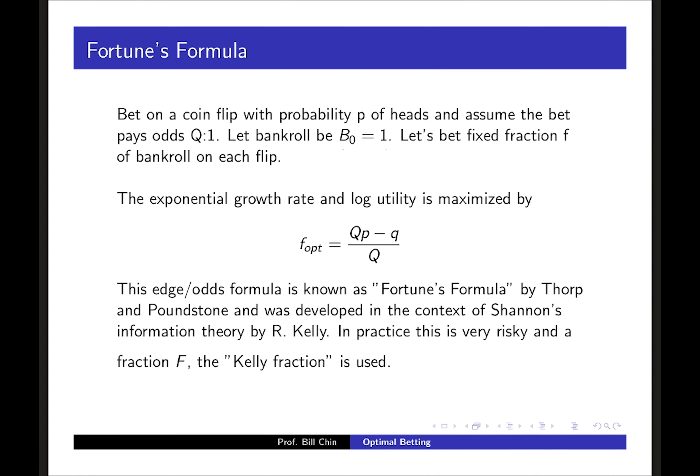Let's suppose we have a coin flip which is in your favor and there's a probability p of heads, and assume that the bet pays odds q to 1. Let's decide to bet a fixed fraction of the bankroll on each flip. You can solve this problem using calculus and the exponential growth rate and also logarithmic utility is maximized by the following formula summarized by saying edge over odds.